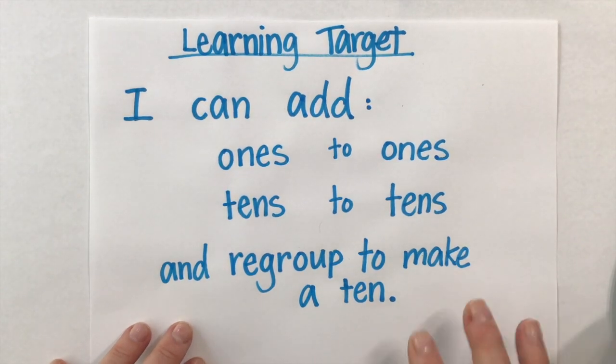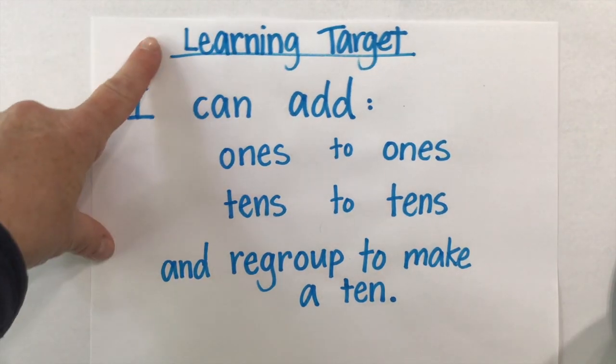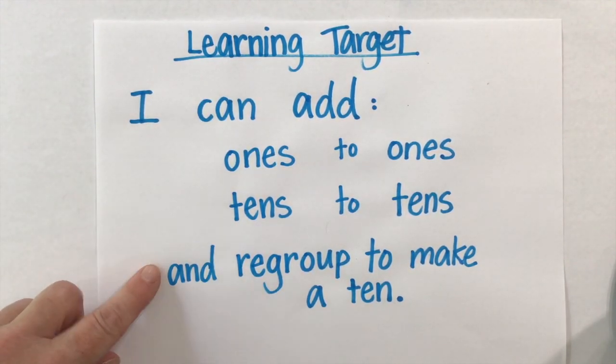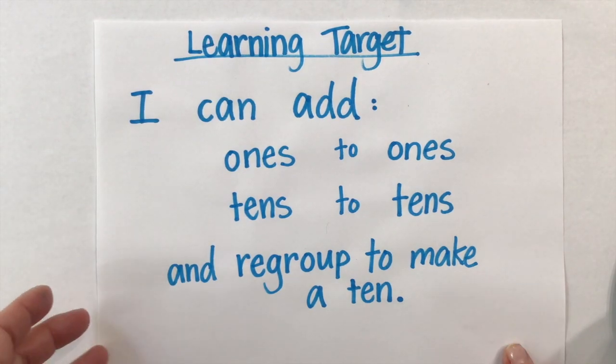We're going to add two-digit numbers. Our learning target is I can add ones to ones, tens to tens, and regroup to make a ten if necessary.